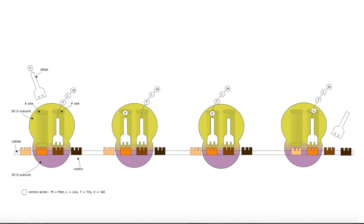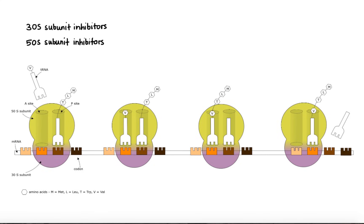This process is repeated until the ribosome encounters a stop codon that signals the end of protein synthesis. Protein synthesis inhibitors act at a specific site on the ribosome to inhibit different steps in protein synthesis. The antibiotic classes that block bacterial protein synthesis can be divided into two groups: the 30S subunit inhibitors and the 50S subunit inhibitors. Classes that bind to the 30S subunit include aminoglycosides, tetracyclines, and glycylcyclines.